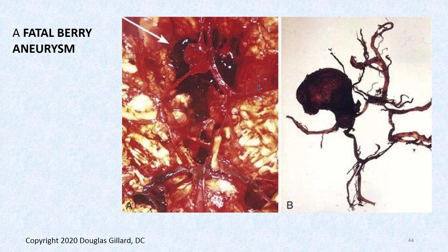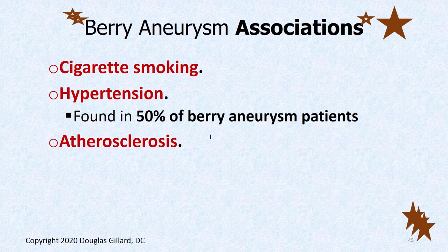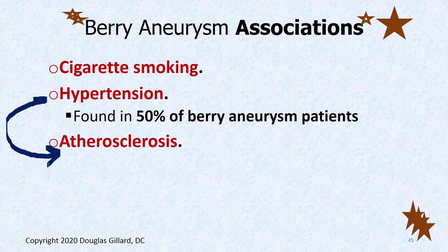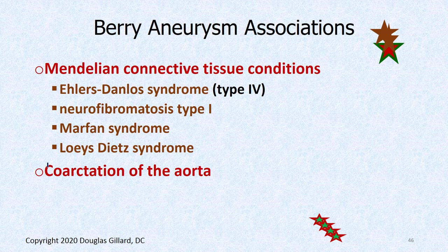Here's a cadaver picture of a fatal berry aneurysm — look how big it was, and you can see all the blood all over the place. Associations and risk factors for berry aneurysms: cigarette smoking, hypertension — about 50% of berry aneurysm patients have hypertension — atherosclerosis, and connective tissue diseases such as Ehlers-Danlos type 4, neurofibromatosis type 1, Marfan syndrome, Loeys-Dietz syndrome, and coarctation of the aorta.